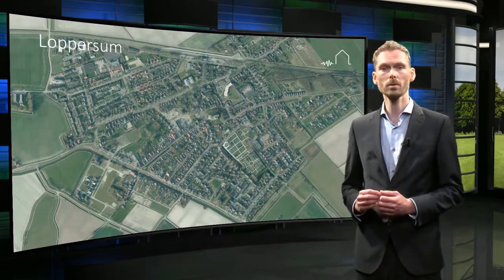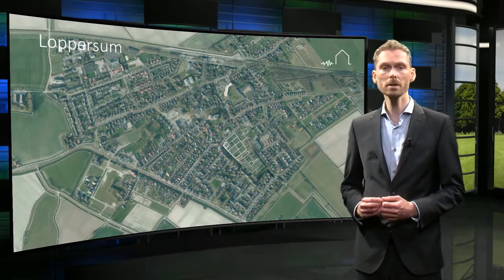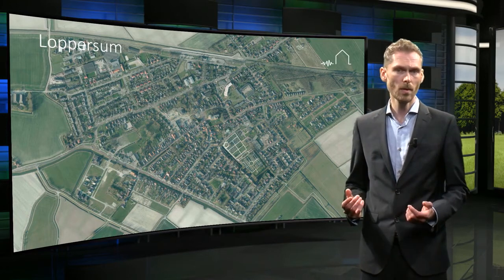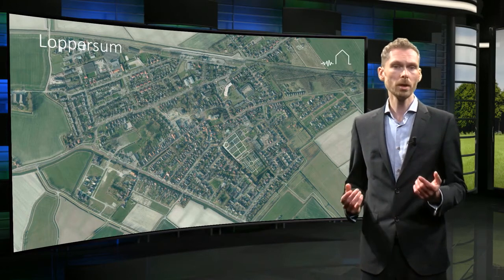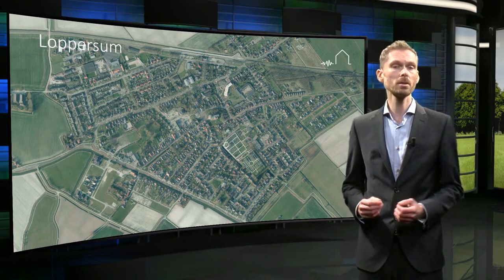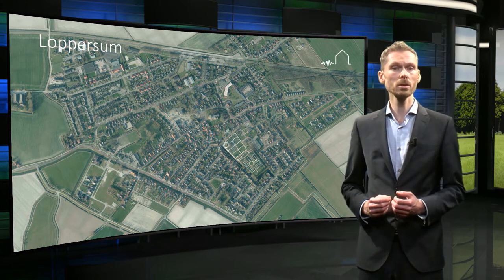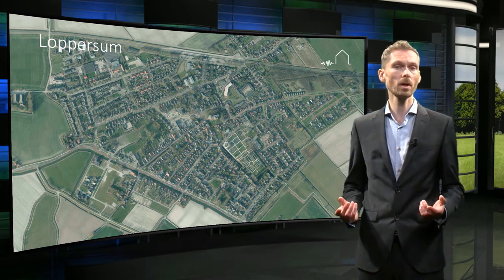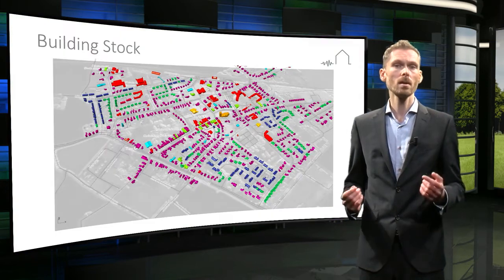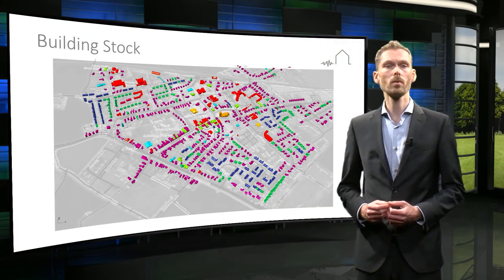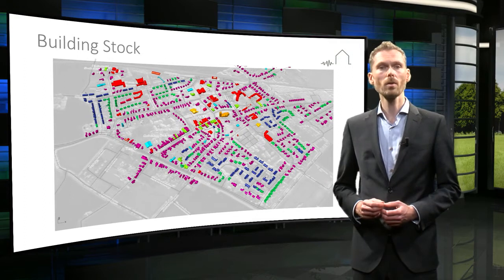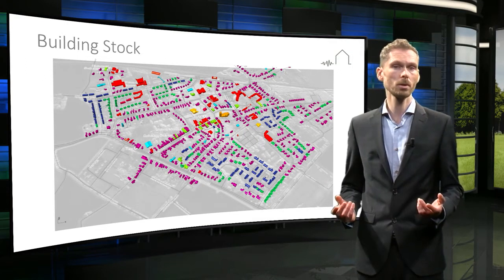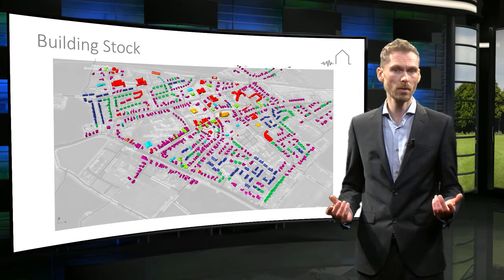Let's now take a look at a practical example — in this case the town of Loppersum, which is located in the center of the region. By using the combination of the parameters just described, you can divide the building stock of Loppersum into groups of buildings represented by a typology. This results in an overview where each individual building with its own specific attributes is now assigned to a typology based on expected similar behavior.